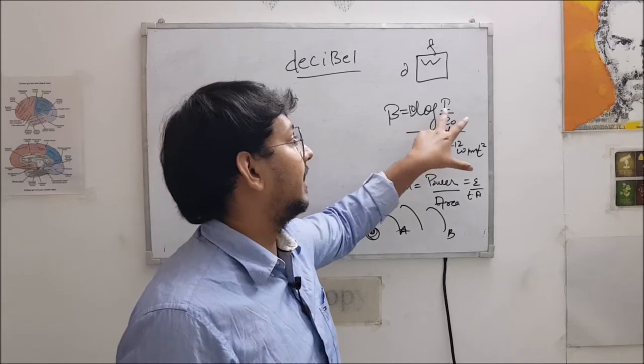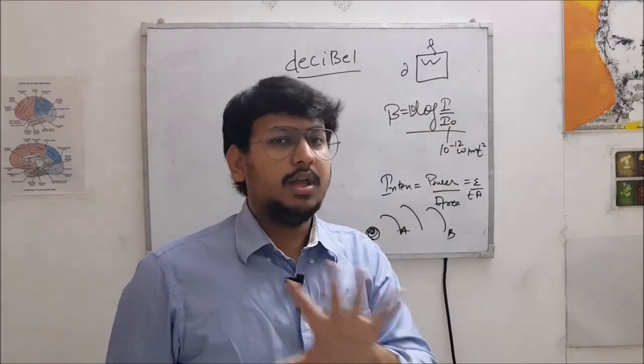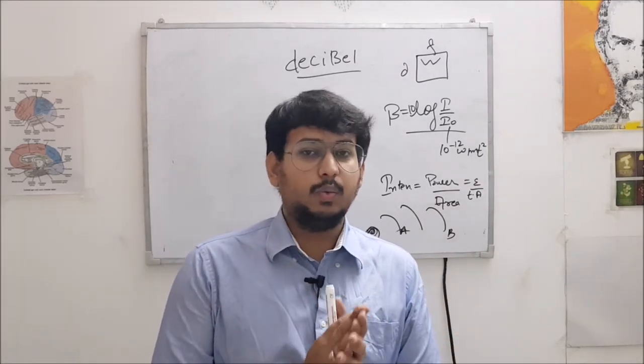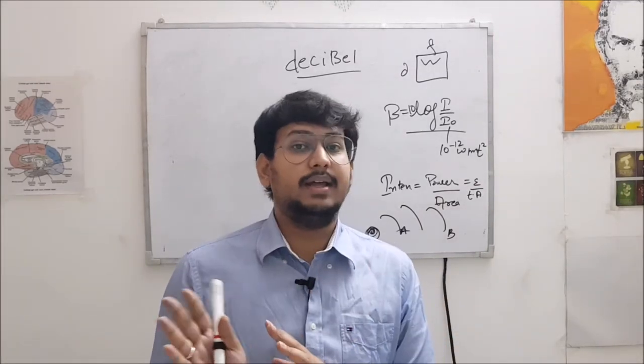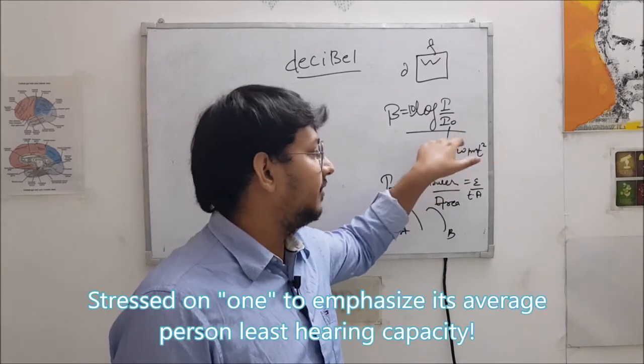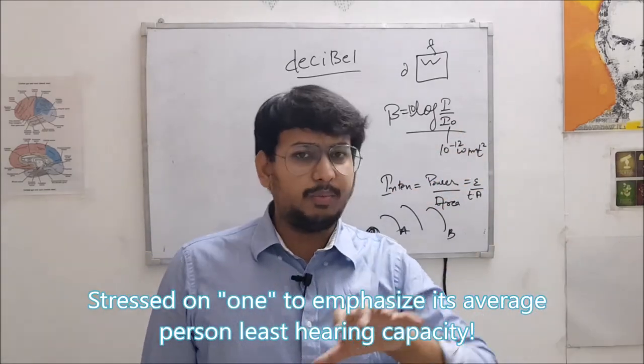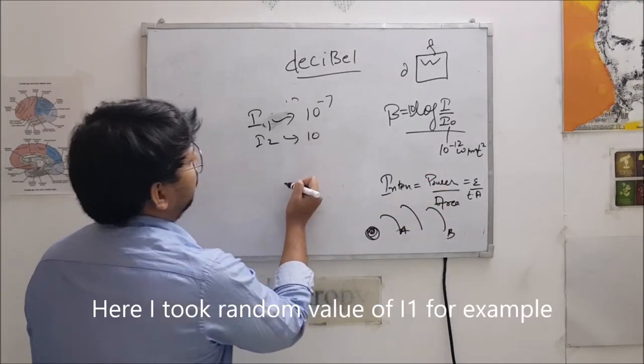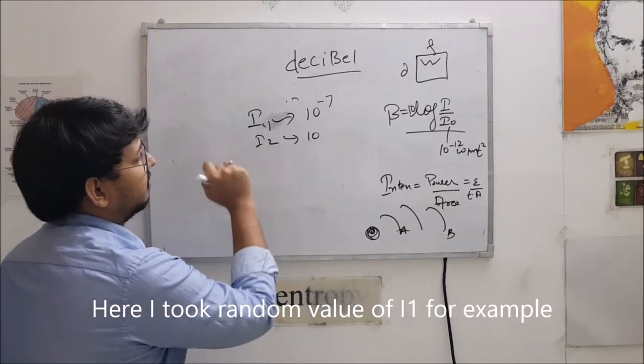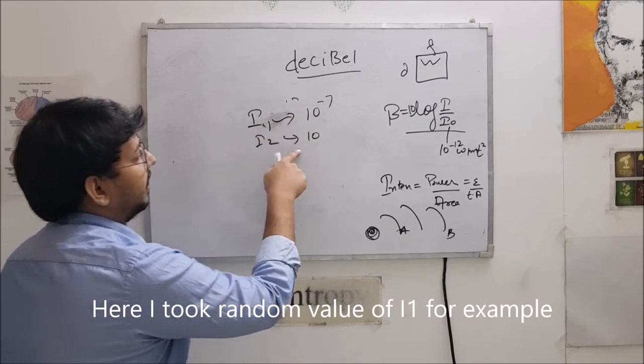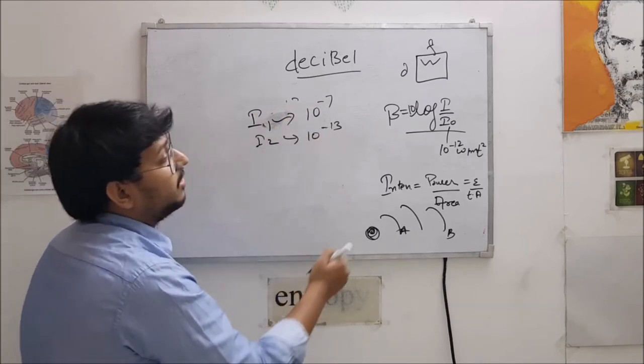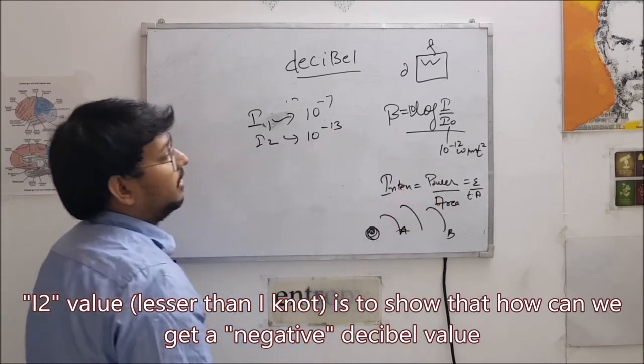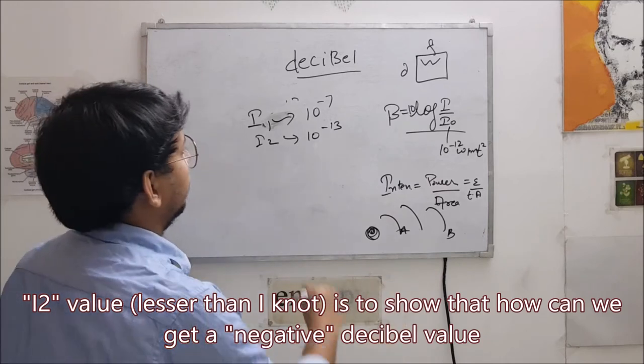Now friend, as you can see, 10 log I upon I0, I0 is fixed. You will put this in every formula and what is I0? I0 is the faintest sound one can hear. Now for example, this is obviously when we take out any constant, it comes from a big population size average. So I1 equals 10 to the power minus 7 and I2 is 10 to the power minus 13. So as you can see, I2 is lesser than I1.